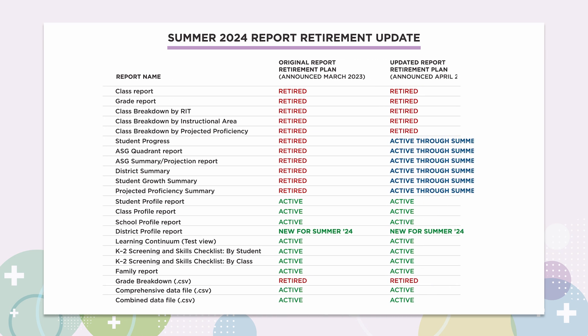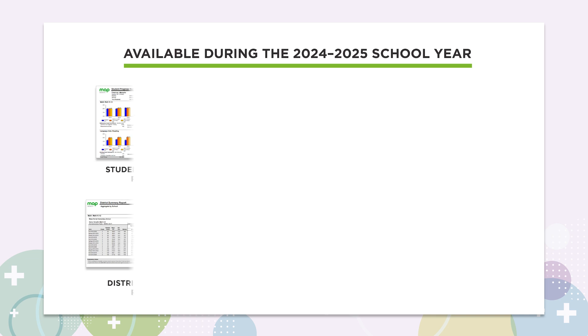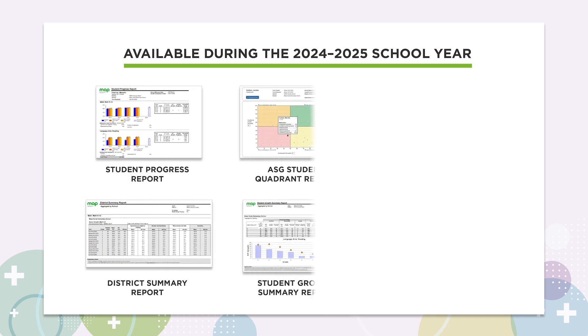In April 2024, we decided to not retire six of the previously announced Legacy Reports just yet. The Student Progress Report, ASG Quadrant Report, ASG Summary and Projection Report, District Summary Report, Student Growth Summary Report, and the Projected Proficiencies Summary Report will continue to be available for the 2024-2025 school year. These six reports, however, will be retired after the 2024-2025 school year in the summer of 2025.